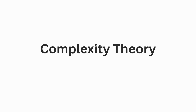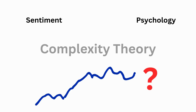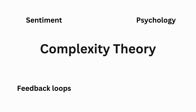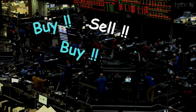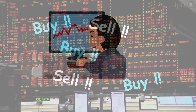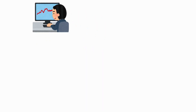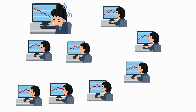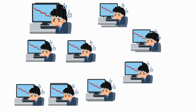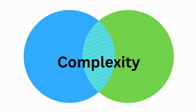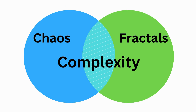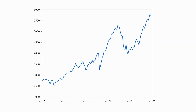Complexity theory provides a framework to understand how these factors influence the market. It looks not only at predictability, but also at how outcomes evolve and self-organise through feedback loops and adaptive behaviours. The theory emphasises how interactions amongst numerous traders — which we can consider to be agents — lead to emergent behaviours and patterns, tying together aspects of chaos theory, which deals with unpredictability, and fractals, which explain the structures we see in price movements.